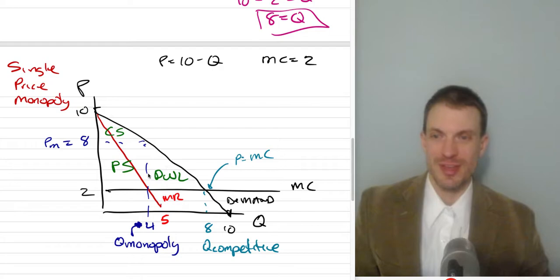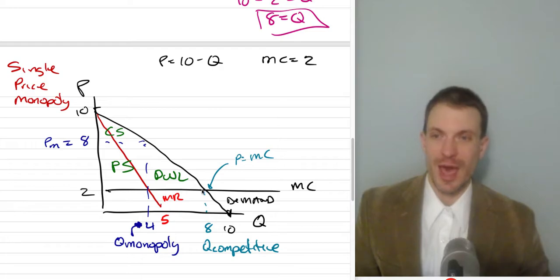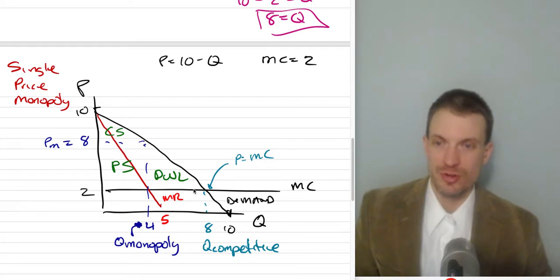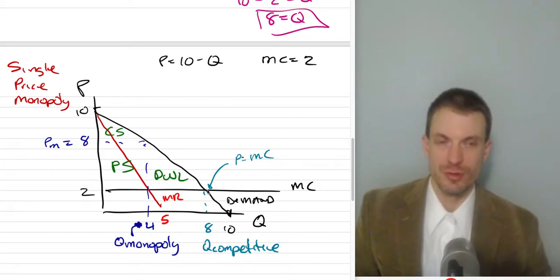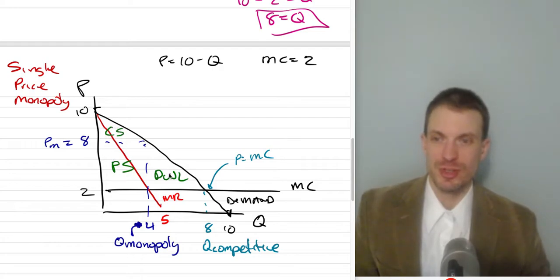That tells us there's going to be deadweight loss. In the single-price monopoly case relative to the competitive case, there's deadweight loss because these 4 units are neither produced nor consumed. The demand curve — the benefit to buyers — is above the marginal cost curve — the cost to sellers — meaning there'd be gains from trade if we produced and consumed these units. But it's not happening because the monopolist produces a smaller amount to raise their price and generate profits, resulting in smaller consumer surplus and deadweight loss.